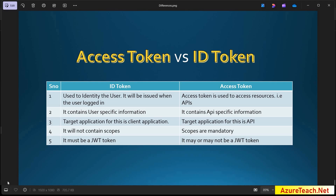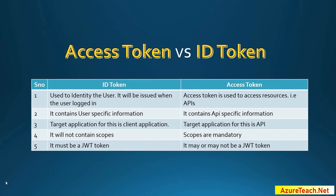Before we go to a practical demo, let us understand the differences theoretically. The ID token is used to identify the user — it is issued when the user logs in. The access token is used to access resources such as APIs. The ID token contains user-specific information, similar to the basic information on the employee ID card. The access token contains API-specific information indicating which API the token is authorized to access.